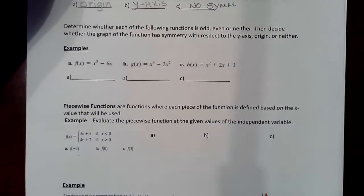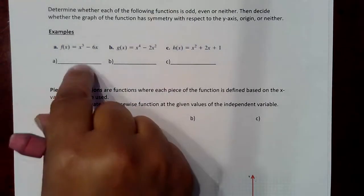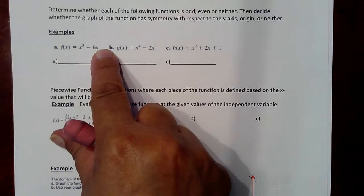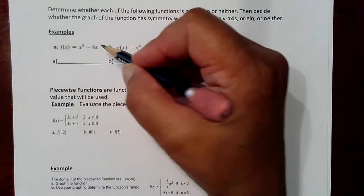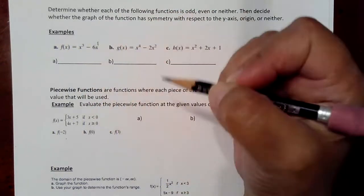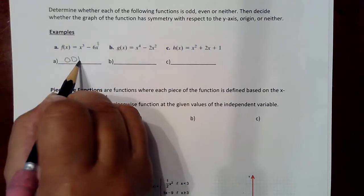Moving on to these examples: determine whether each function is odd, even, or neither. For a polynomial function, you can just look at the degree of each term. If all the terms have odd powers, as in example part A — where each term has an odd power — then the function is said to be odd.